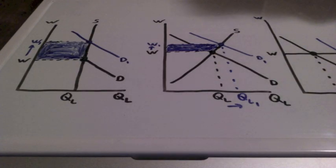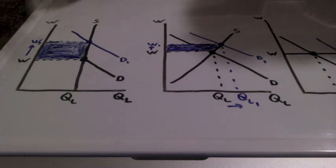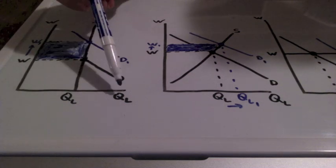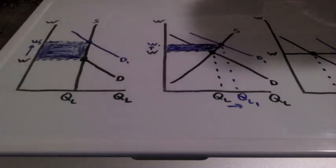In this lesson we're going to discuss economic rent, which is the payment for a factor of production such as labor. For all of these graphs, W represents the vertical axis, which represents wages, and QL represents the horizontal axis, which represents the quantity of labor.